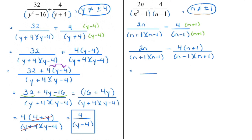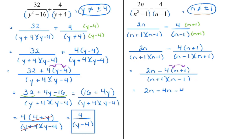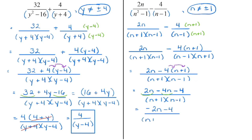Once we have a common denominator, we're actually going to subtract the fractions. Bring them together over the lowest common denominator — the denominator stays the same — and now we need to subtract the numerators. To get rid of the brackets, distribute the negative 4 into the brackets. When we do that, we get 2n minus 4n minus 4. Watch that sign: negative times a positive is a negative. And that is all written over the denominator — once you get a common denominator, you carry it along the whole way down.